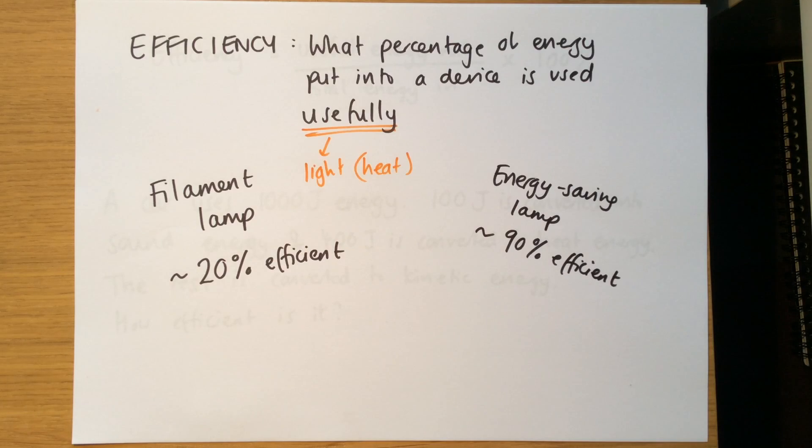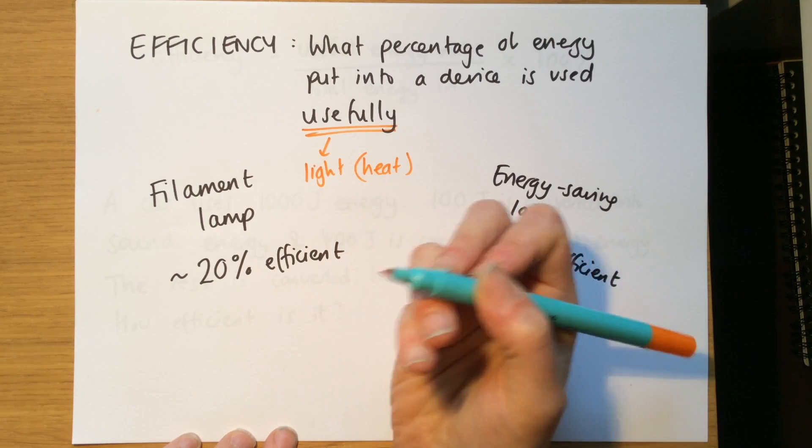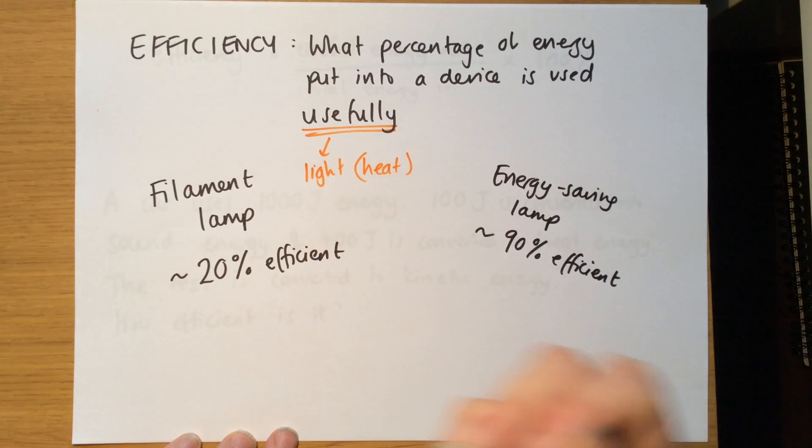For something like an oven, or a toaster, it's either way around. A toaster, the useful energy is the heat, but you can see that toasters, they glow, they light up, and the waste energy there is the light. So you have to think about each situation separately.